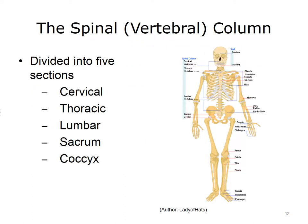Now let's look at the various components of the skeleton. The spine, or backbone, is a vertical column of bones that supports the weight of the head, neck, and trunk of the body and protects the spinal cord. It is also known as the spinal or vertebral column and is divided into five sections: cervical, thoracic, lumbar, sacrum, and coccyx. The cervical vertebrae are in the neck, the thoracic vertebrae are in the chest, and the lumbar vertebrae are in the lower back. The sacrum is a group of five fused vertebrae, and the coccyx, or tailbone, is a group of several small fused vertebrae.